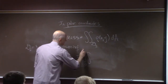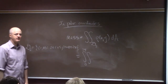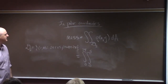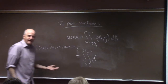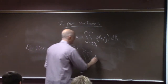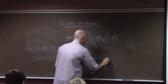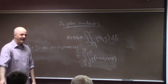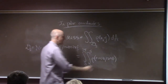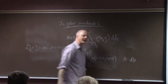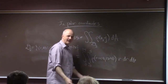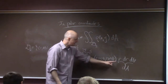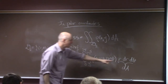Typically θ is on the outer integral (0 to 2π) and r is on the inner (0 to 5). Replace x with r cos θ and y with r sin θ. But dA does NOT equal dr dθ — it equals r dr dθ. That extra factor of r must be there or you will get the wrong answer.